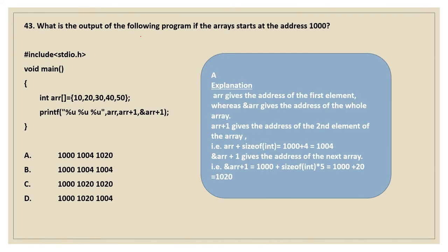Moving on to the next question. What is the output of the following program if the array address starts with 1000? Let's read the code now. hash include stdio.h, void main, open curly, int array equal to 10, 20, 30, 40, 50. Now we are asked to print the address of the array. Array means we are mentioning the address of the first array element, which is given in the question as 1000. So for this one, the answer is going to be 1000.